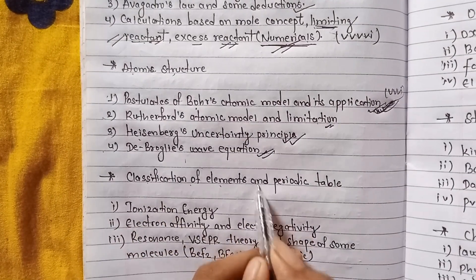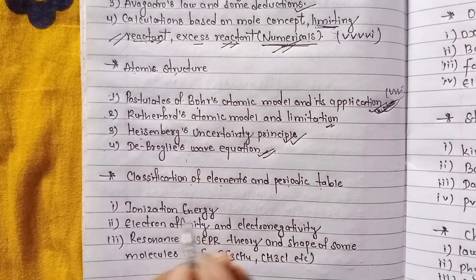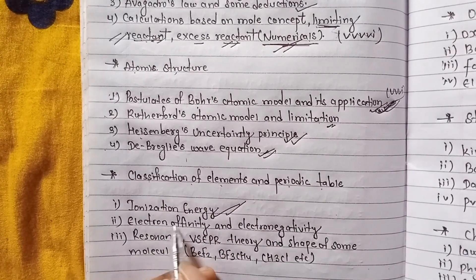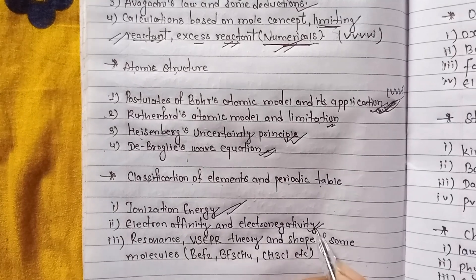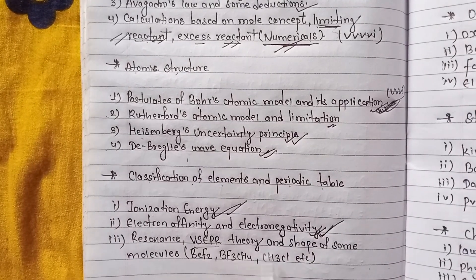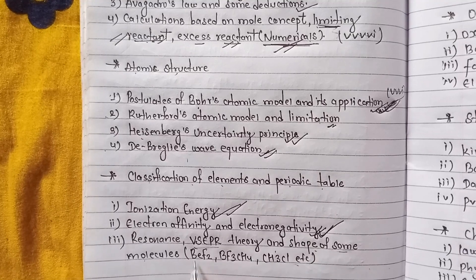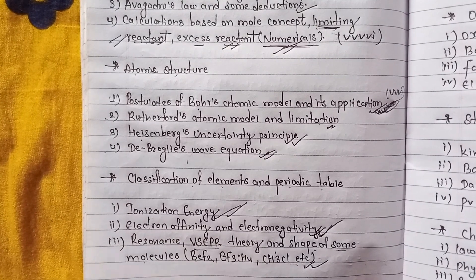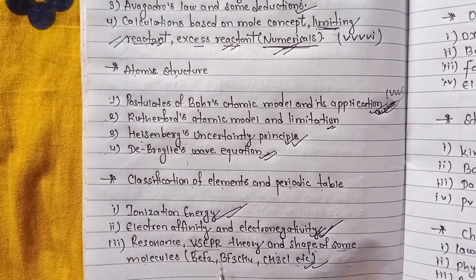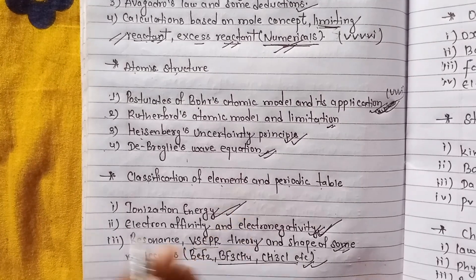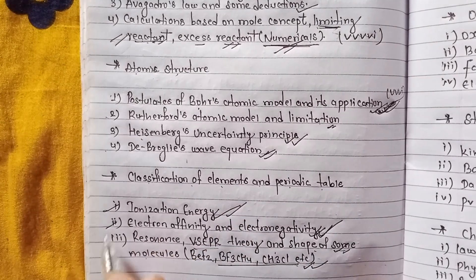Classification of elements and the periodic table. Ionization energy is very important. Electron affinity and electronegativity are very very important. Resonance, VSEPR theory, and the shapes of some molecules are also important.